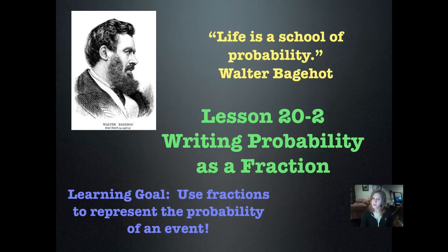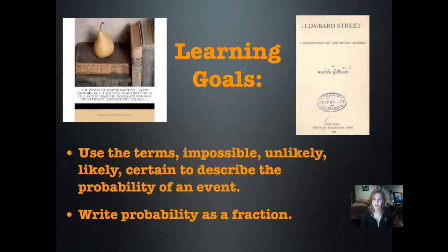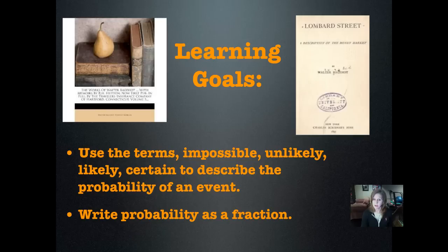Our learning goal tonight is to use fractions to represent the probability of an event. Our individual lesson learning goals are to use the terms impossible, unlikely, likely, and certain to describe the probability that an event will occur, and to write probability as a fraction and use those fractions to decide which terms to use.